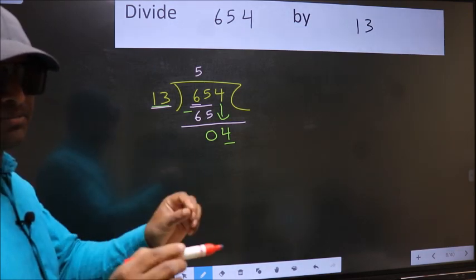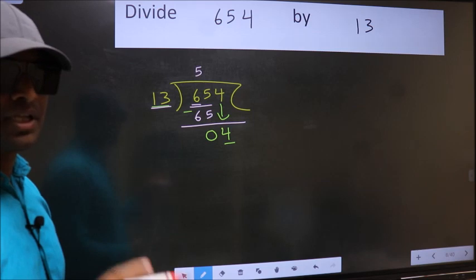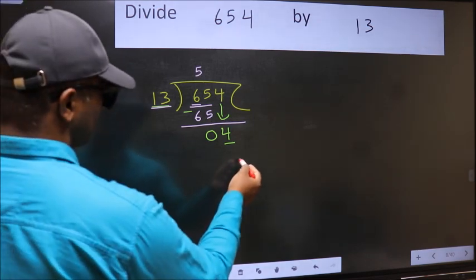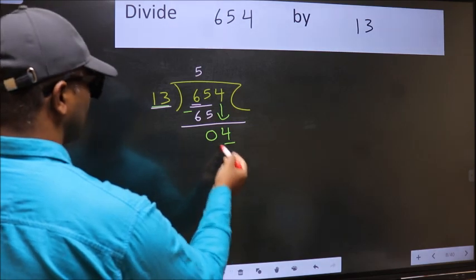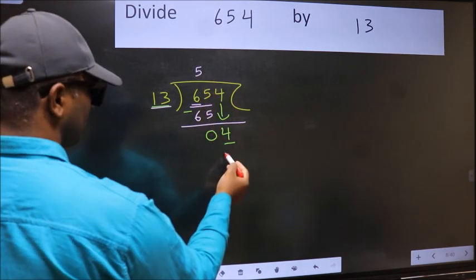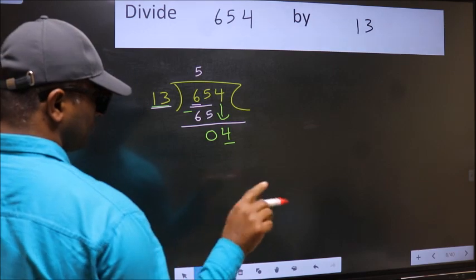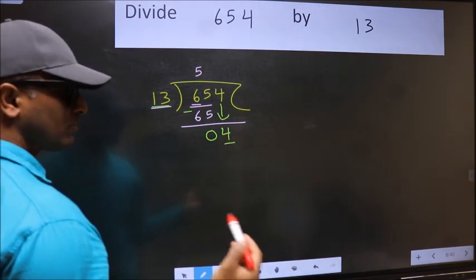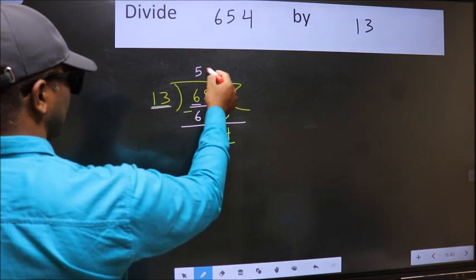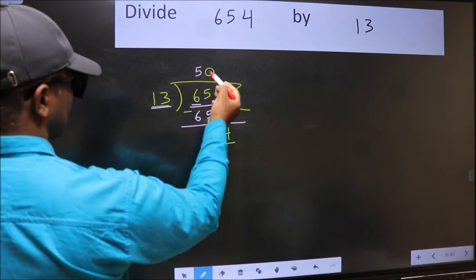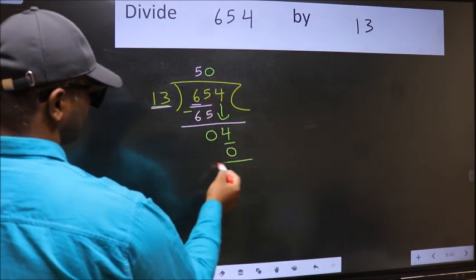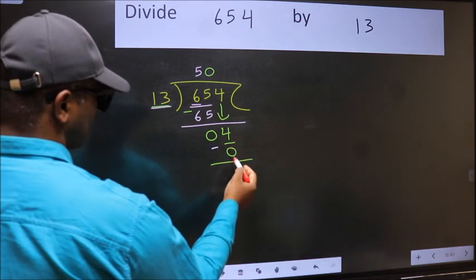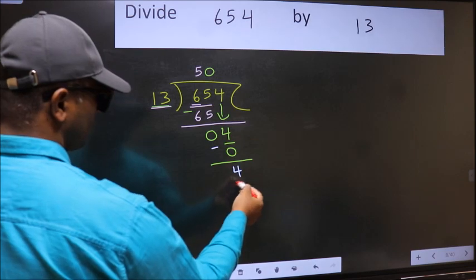Instead, what you should think of doing is which number should we take here? If I take 1, we will get 13, but 13 is larger than 4, so we should take 0. So 13 into 0 is 0. Now we should subtract: 4 minus 0 equals 4.